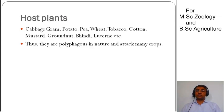If we talk about host plants, it attacks cabbage, gram, potato, pea, wheat, tobacco, cotton, mustard, groundnut, brinjal, lucerne, etc. If we look at this, this is a polyphagous pest, meaning it feeds on a wide range of host plants.